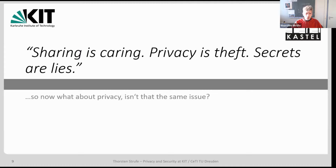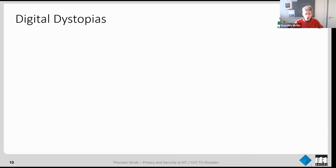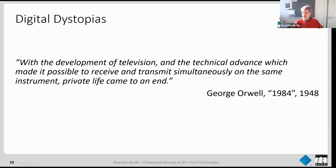What is privacy? George Orwell wrote in 1984 — written in 1948 — that 'with the development of television and the technical advance which made it possible to receive and transmit simultaneously on the same instrument, private life came to an end.' He foresaw that once an entity can observe what you're doing in real time, there is no private life anymore. To some extent, this is demonstrated today.